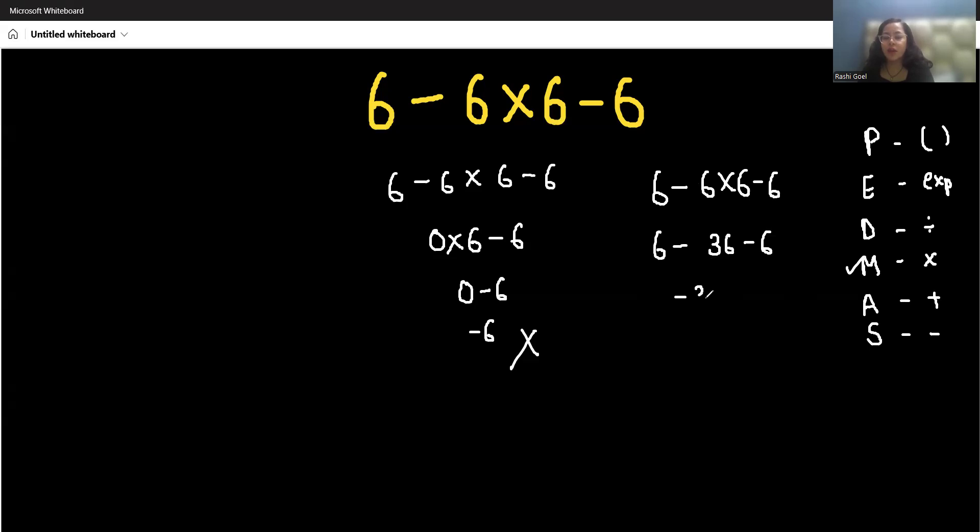6 minus 36 is minus 30, minus 6, that is minus 36. So what is the correct answer? Minus 36. I hope it's clear and you find it useful.